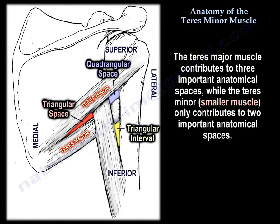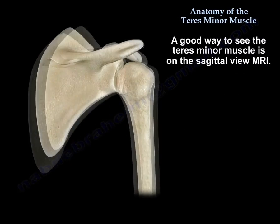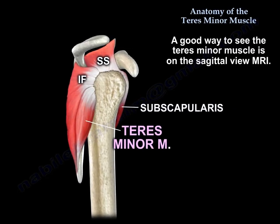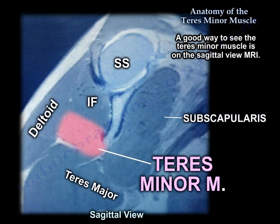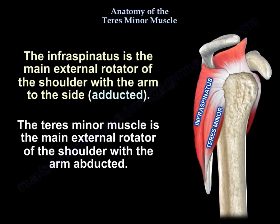The Teres Minor, the smaller muscle, contributes to only two important anatomical spaces. A good way to see the Teres Minor muscle is on the sagittal view of the MRI, as you can see here. The infraspinatus is the main external rotator of the shoulder with the arm abducted.